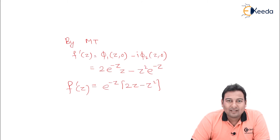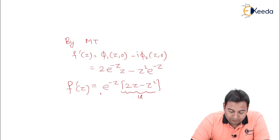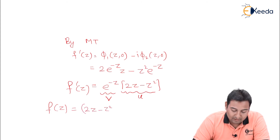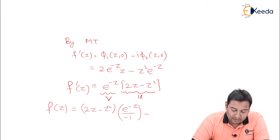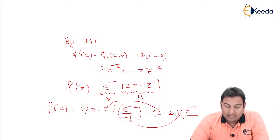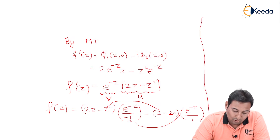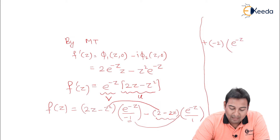To get f of z, we integrate f dash z. Integration uses the LIATE rule — logarithmic, inverse, algebraic, trigonometric, exponential. Here (2z minus z squared) is the algebraic term u, and e raised to minus z is the exponential term v. So f of z equals u as it is, (2z minus z squared), times the integration of e raised to minus z, which is e raised to minus z upon minus 1, minus the derivative (2 minus 2z) times the integration e raised to minus z upon minus 1, and continuing: plus the derivative of (2 minus 2z), which is minus 2, times e raised to minus z upon minus 1.